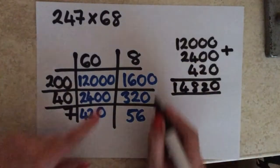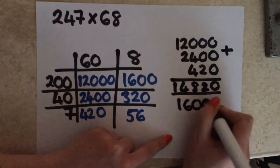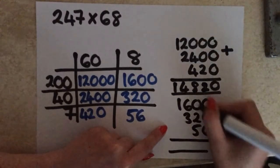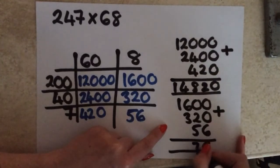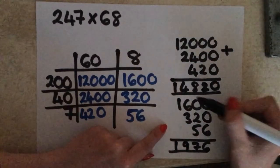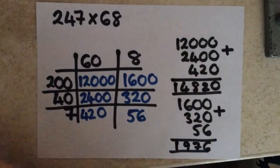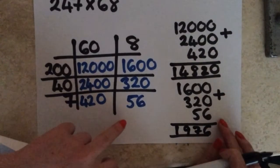Then I'm going to add my other 3 numbers underneath. So I've got 1,600, 320, and then 56. My units are lined up, my tens are lined up, my hundreds are lined up. That's going to give me 6, 5 plus 2 is 7, 6 plus 3 is 9, and then my 1 — so that's 1,976. Then I need to add together my 14,820 and my 1,976. When you're doing this, you'll be able to fit it all on one page.